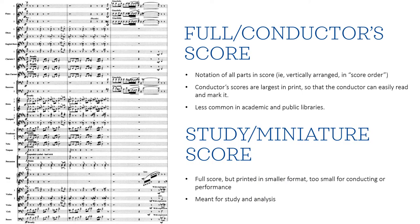Critical and urtext editions are usually full scores, meaning they include all the parts arranged in score order one on top of the other. Conductor scores, which are not very common in academic libraries, are full scores in large print for the conductor to read and mark. More common in libraries are study or miniature scores, which are full scores printed in a small format — too small generally to perform or conduct from. They're meant for study and analysis, so they're very common in library collections, and they often include essays or other reference materials.